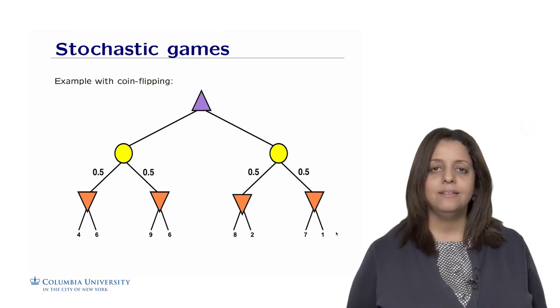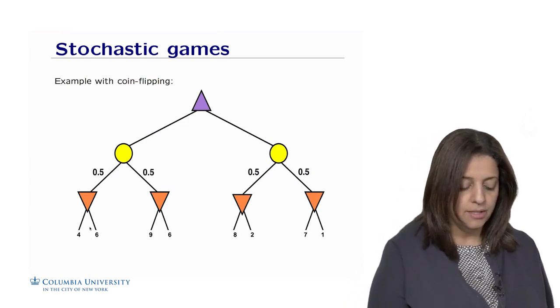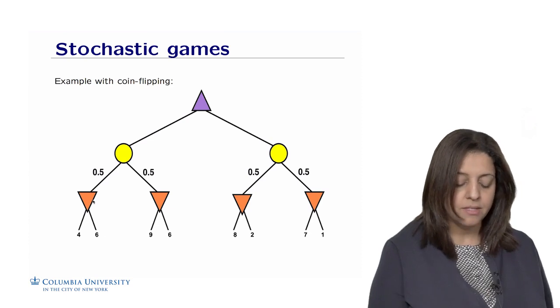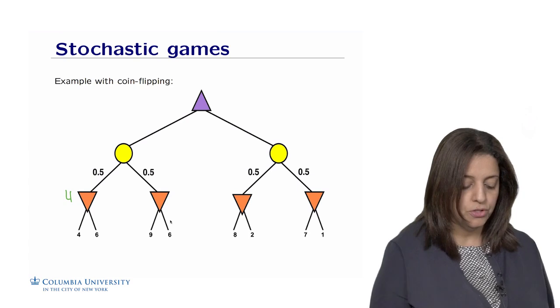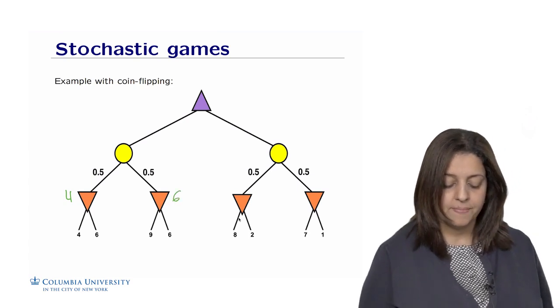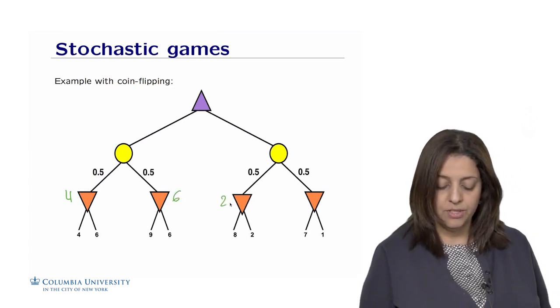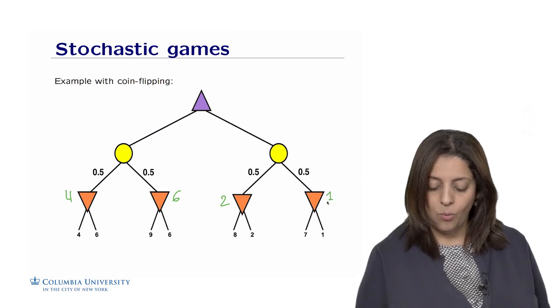The way that expected minimax would work is to first get the min value. So at this point, the value is 4. For this one, we get 6. For this min value, we get 2, and for this one, we get 1.